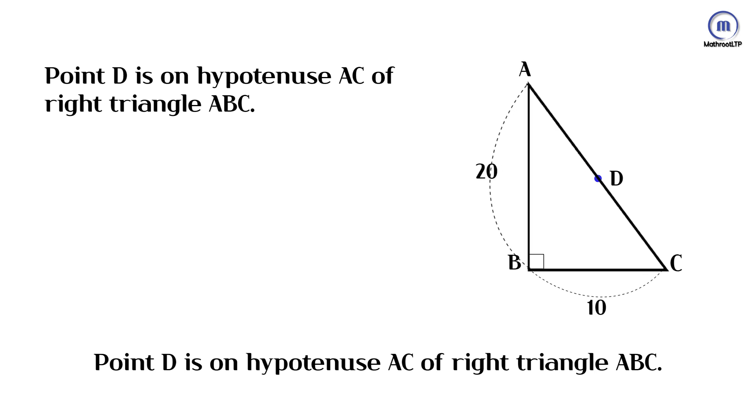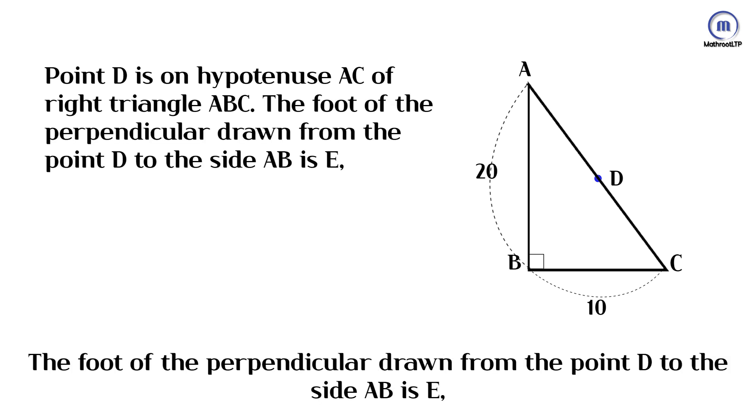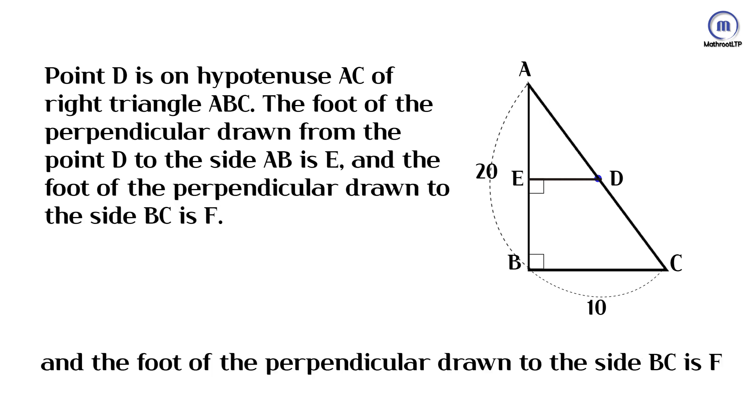Point D is on hypotenuse AC of right triangle ABC. The foot of the perpendicular drawn from point D to side AB is E, and the foot of the perpendicular drawn to side BC is F.